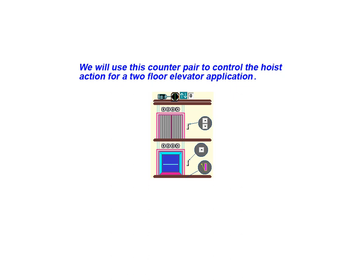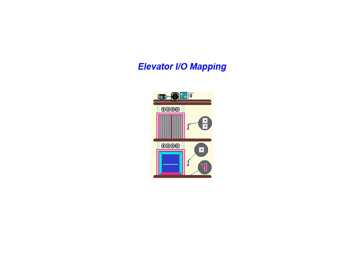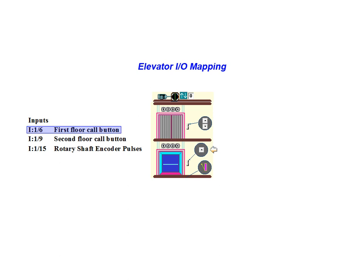We will use this type of counter pair to control the hoist action for a two-floor elevator application. The first floor call button is connected to input REC 1 bit 6. The second floor call button is connected to input REC 1 bit 9, and the rotary shaft encoder is connected to input REC 1 bit 15.